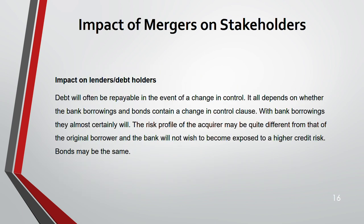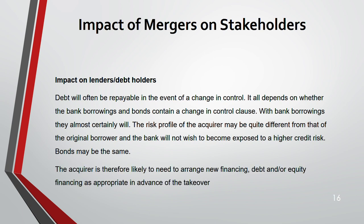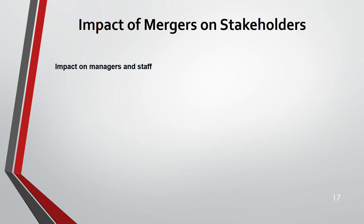Impact on debt holders: if there is a change in control, debt may become repayable. The risk profile of the acquirer may be different from that of the original borrower, and the bank will not wish to become exposed to higher credit risk. The acquirer is likely to arrange new financing — either debt or equity — before the takeover. The acquirer may change the debt-to-equity ratio to avoid the high credit risk that the original borrower was exposed to.